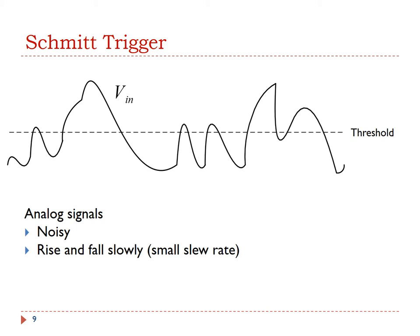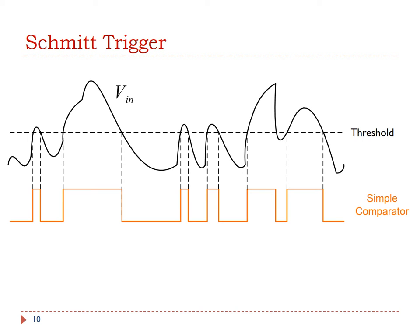The slew rate describes how fast a voltage changes. It is usually measured in volts per microsecond. Let's see what will happen if we use a simple comparator to convert the analog input signal to a binary digital signal. The simple comparator compares the input voltage with a predefined threshold. If the input is larger than the threshold, the comparator outputs high level; otherwise, it outputs low level. Here is the output of the simple comparator.